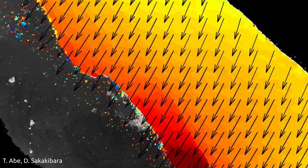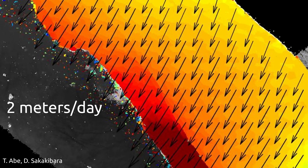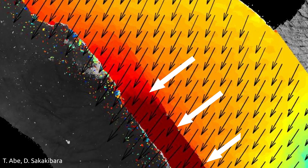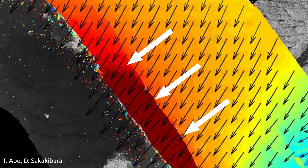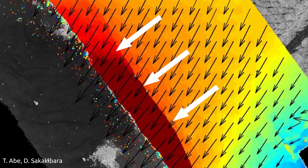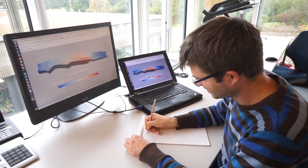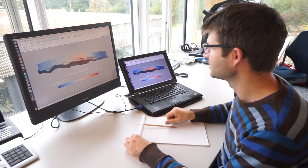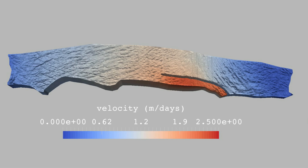Here, for instance, the ice moves up to two meters per day, and one can see that a one kilometer long iceberg is about to detach. These data are crucial to run mathematical models, which can reproduce calving by computer simulations.